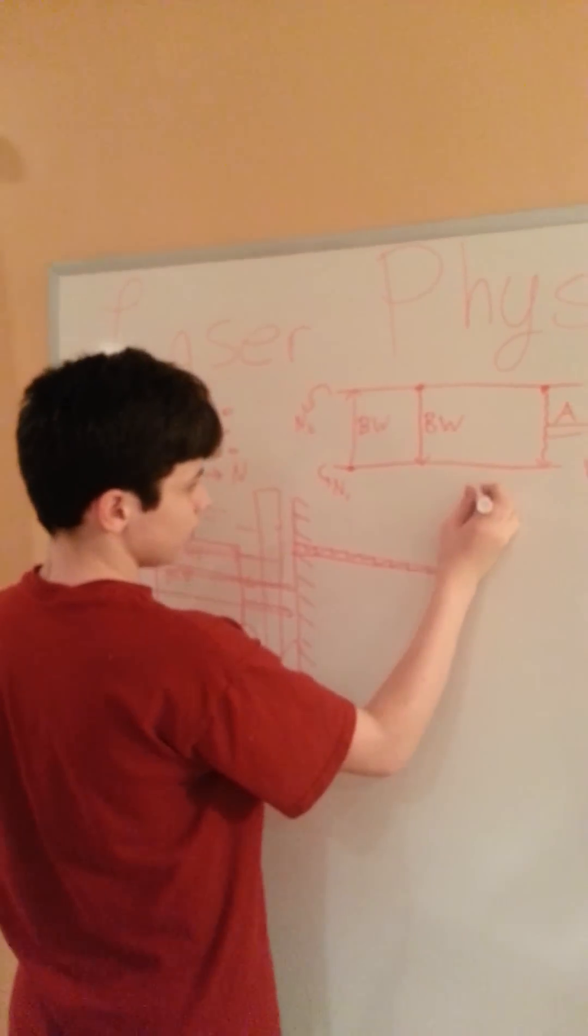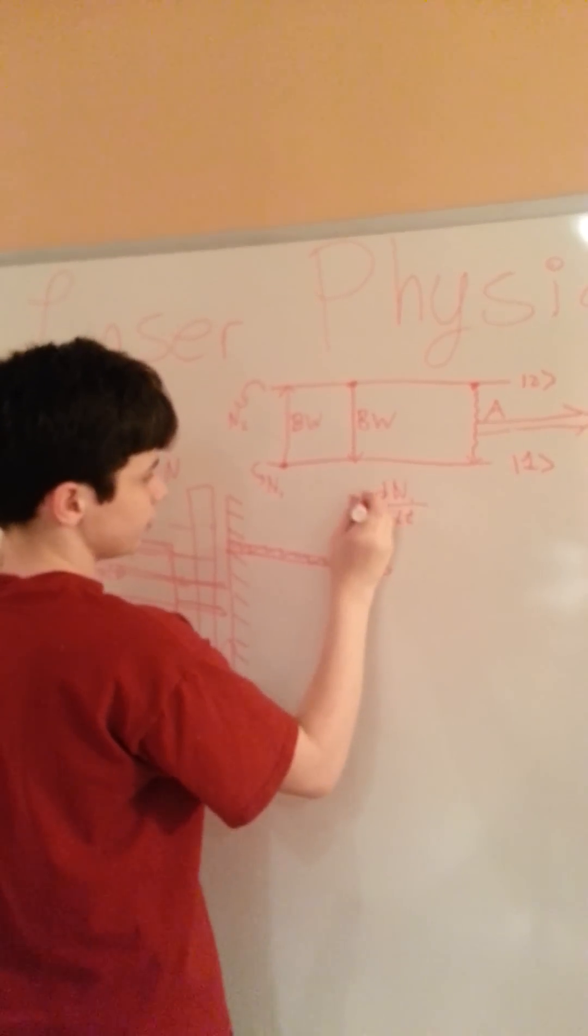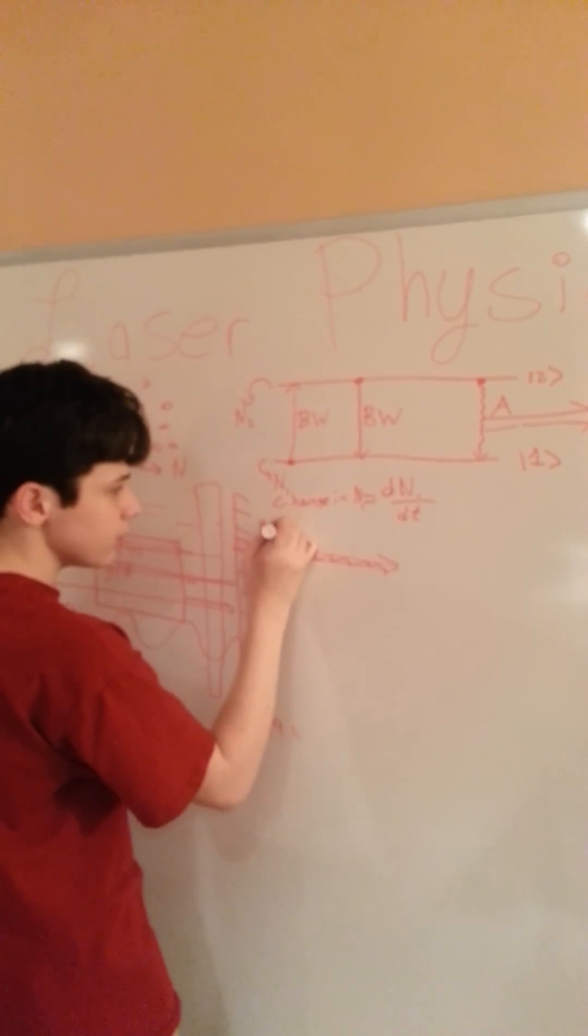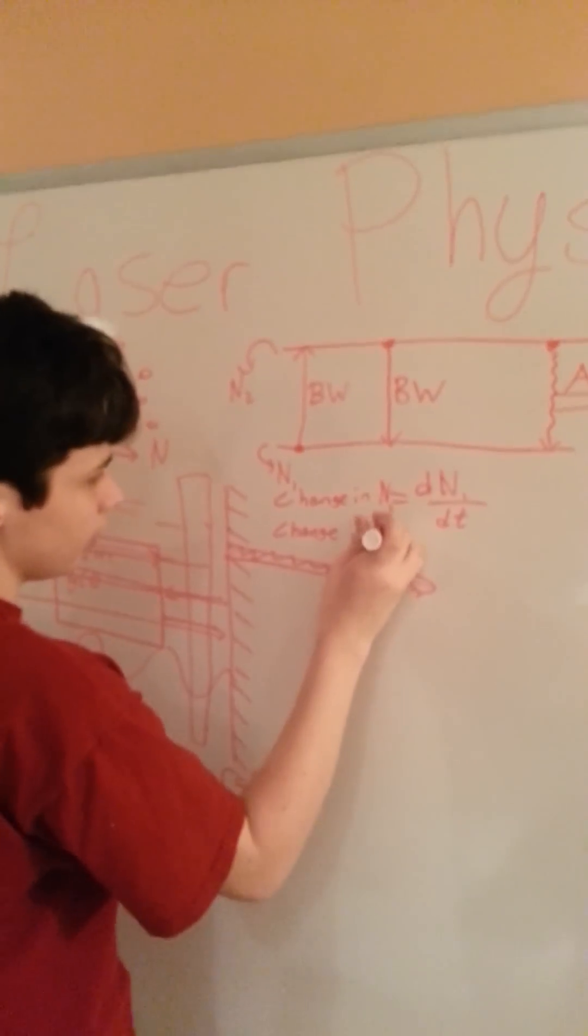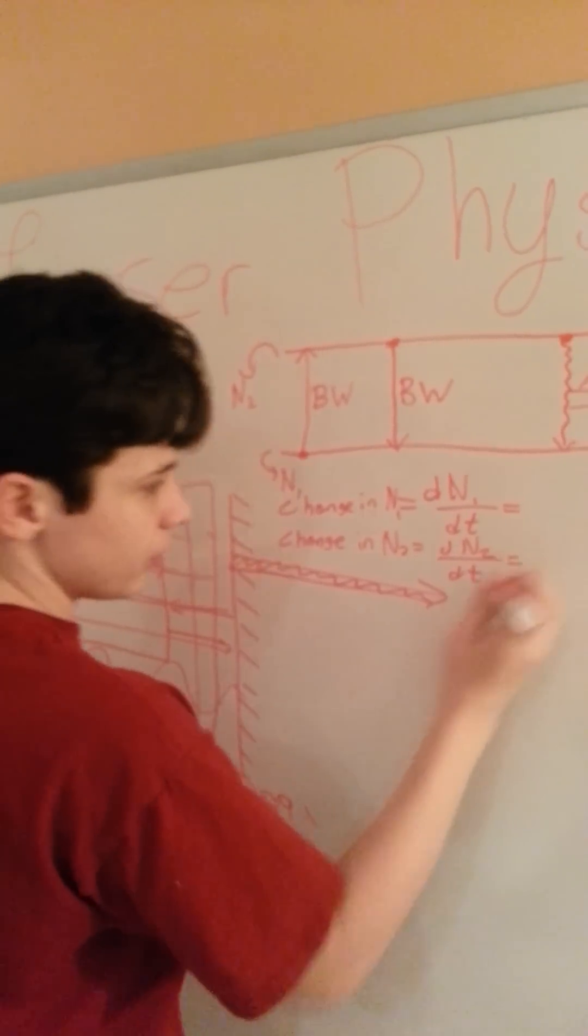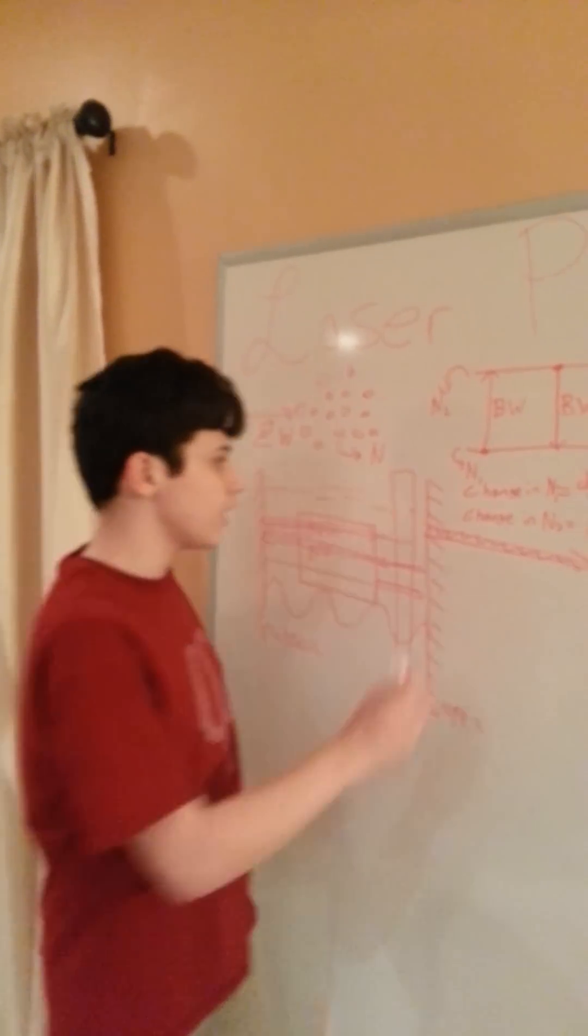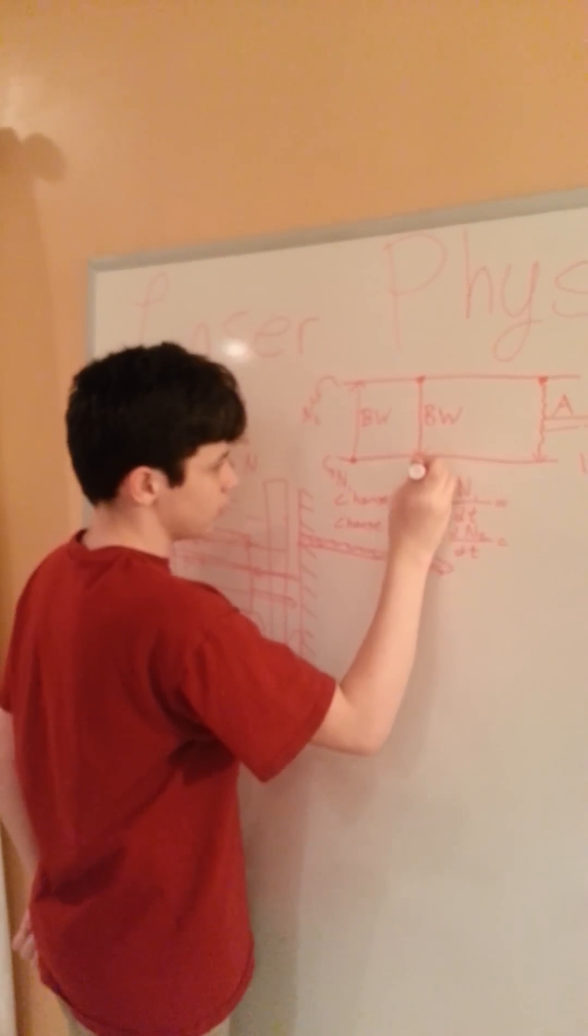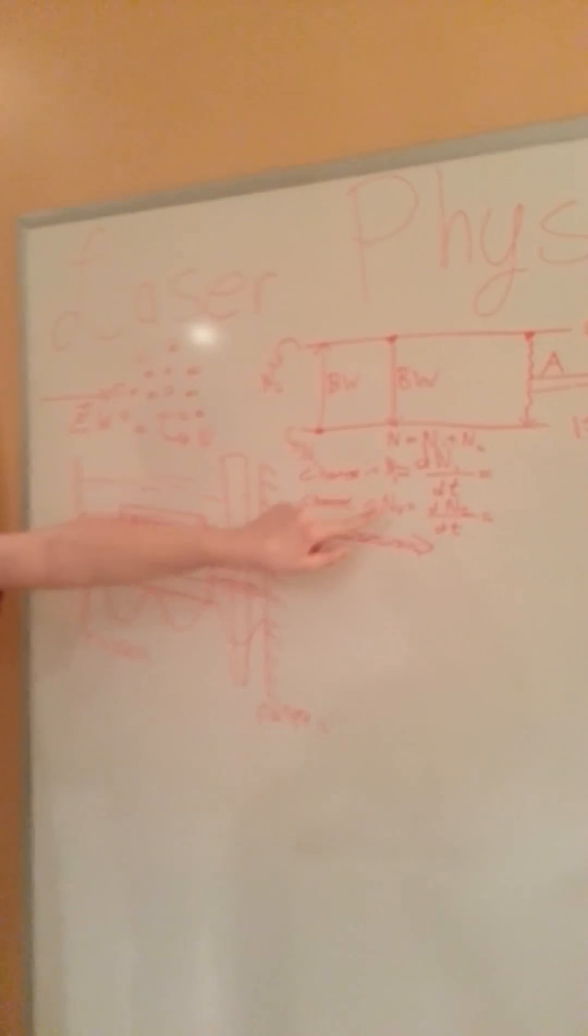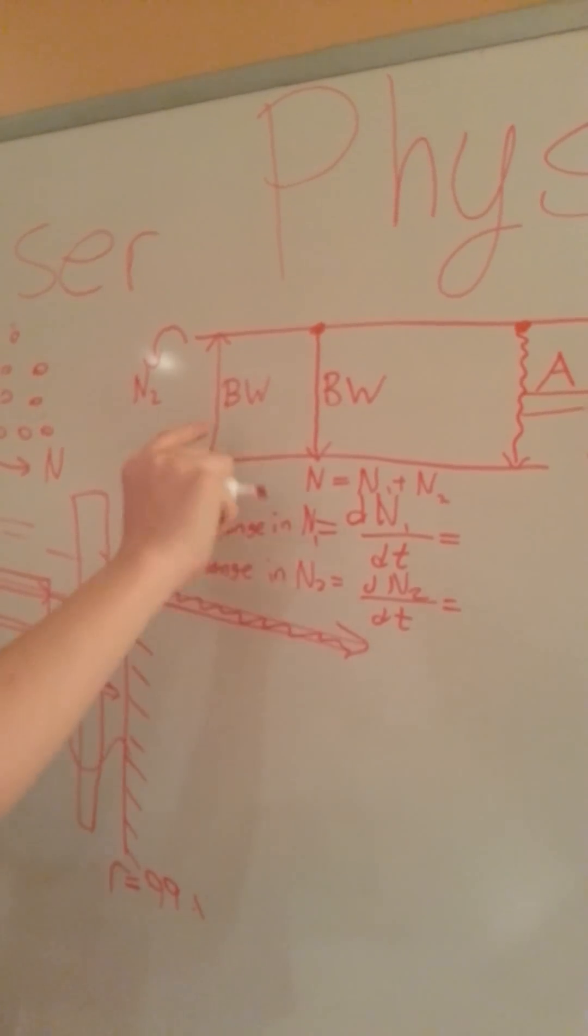First of all, let's look at the change in these equations. Let's say dN1/dt, which is just fancy for change in N1, change in N2, dN2/dt, and you want to just get some equations for these things. First of all, notice that these two things have to add up to the total N. So first of all, that's the first equation.